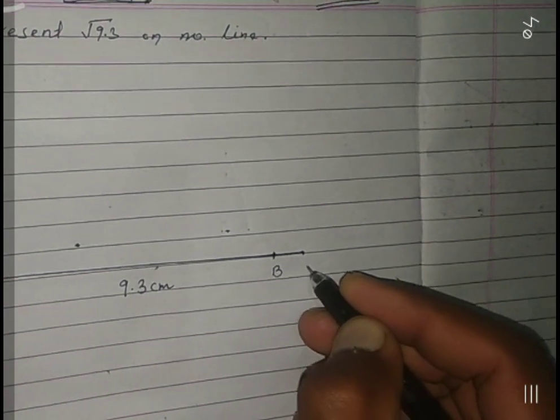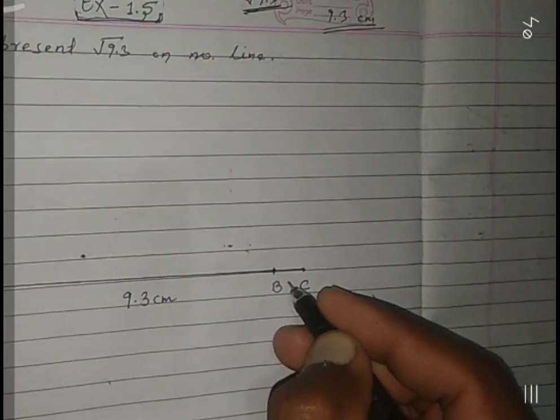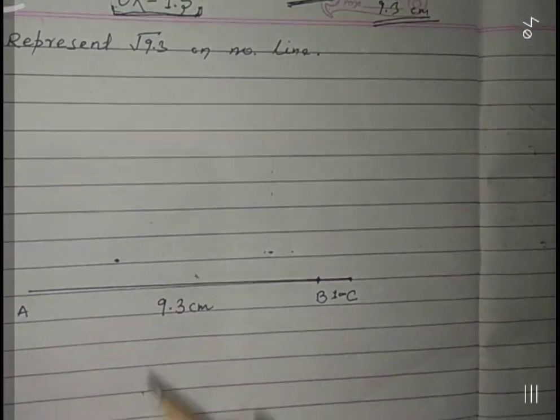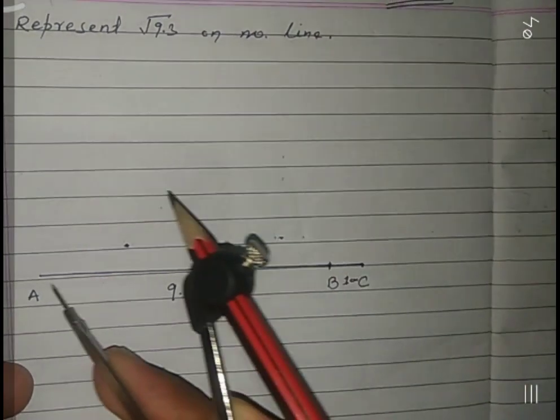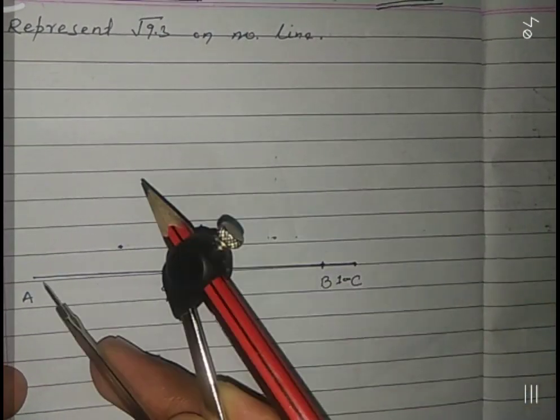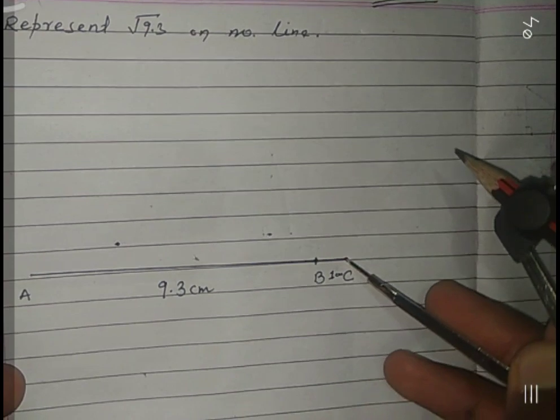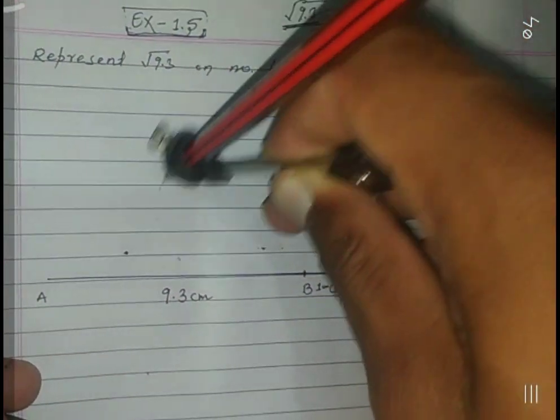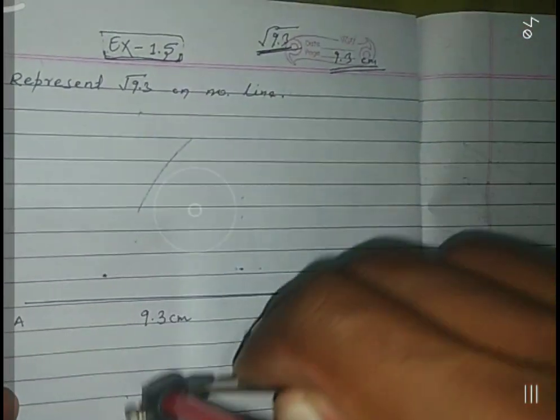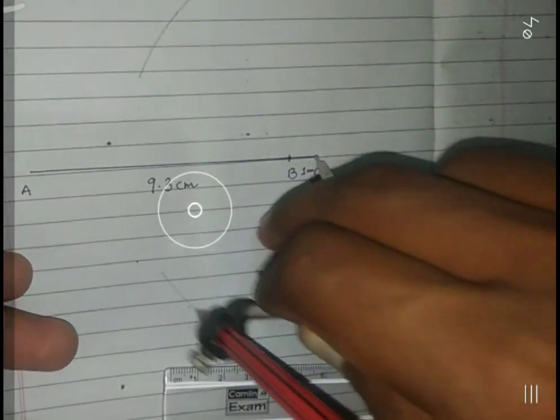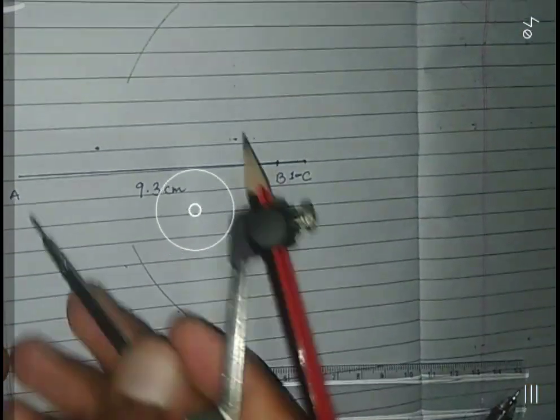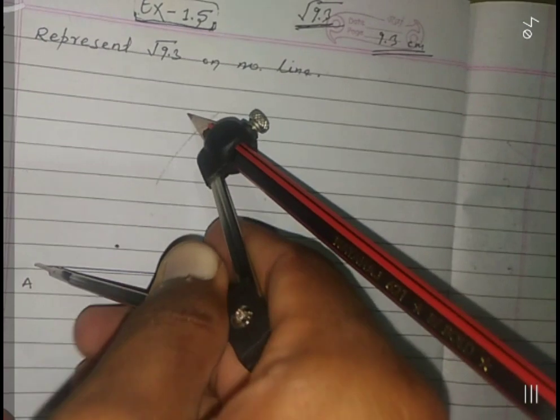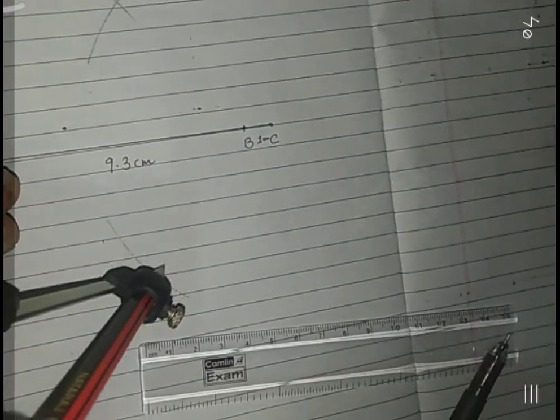Now we have to bisect AC. We have to bisect AC. We have to point C and draw an arc here and also here, and also from A we draw an arc. This will cut this point and this point.